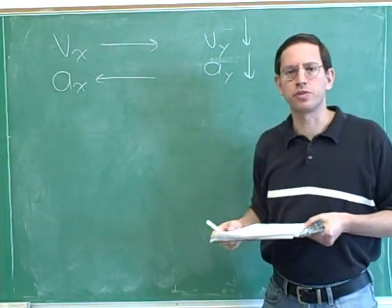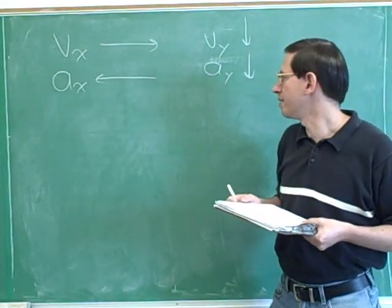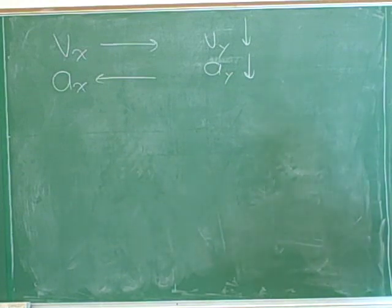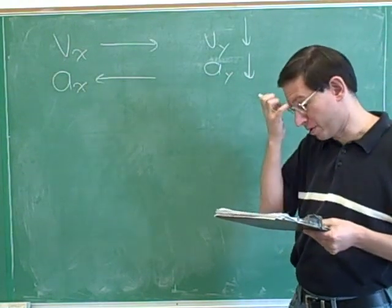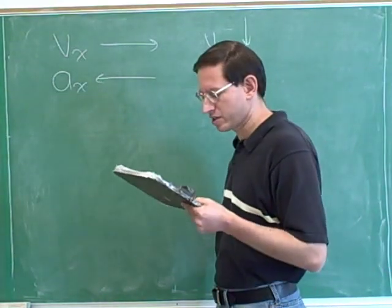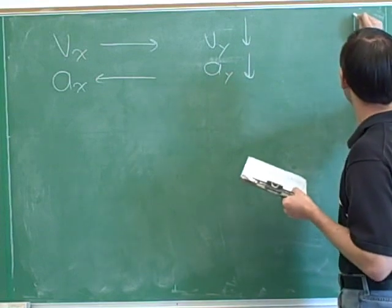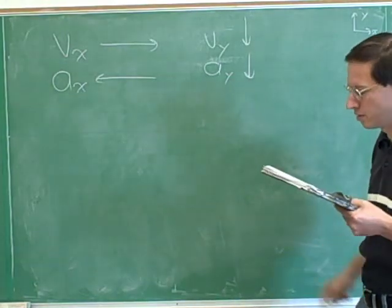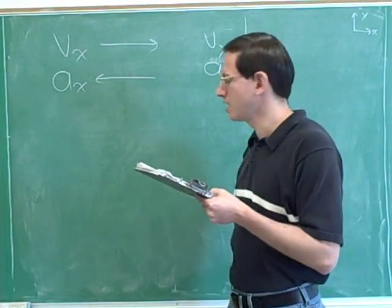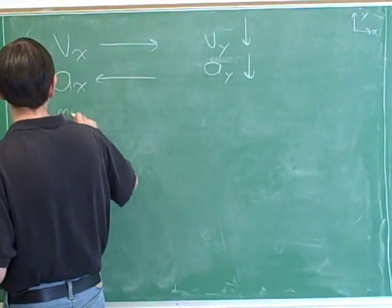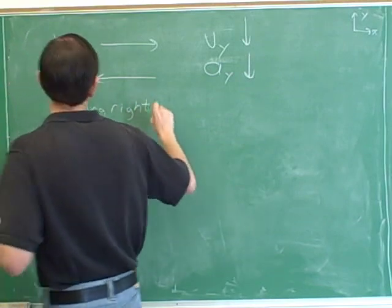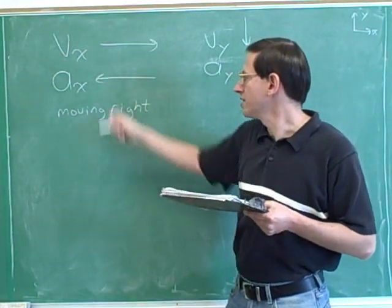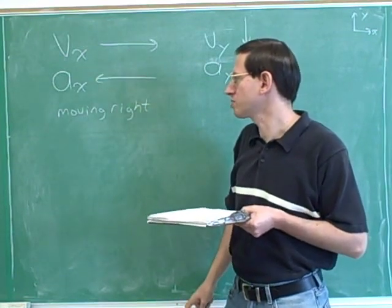Now all of these vectors refer to the same object. Try writing down everything you can about this object. Let's say the x component is horizontal and the y component is vertical. The x component tells us that we're moving to the right. The velocity tells you which way you're moving — the acceleration doesn't. The acceleration is to the left, but we're moving right. This acceleration is anti-parallel to the velocity, which means that we're slowing down.